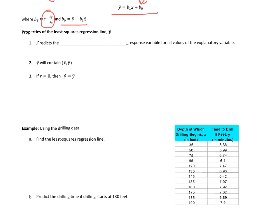Let's look at the properties of the least squares regression line, y hat. The biggest one is that it predicts the average response variable, the average y value, the average response variable for all values of the explanatory variable. It's important to remember that y hat predicts averages. That's important.